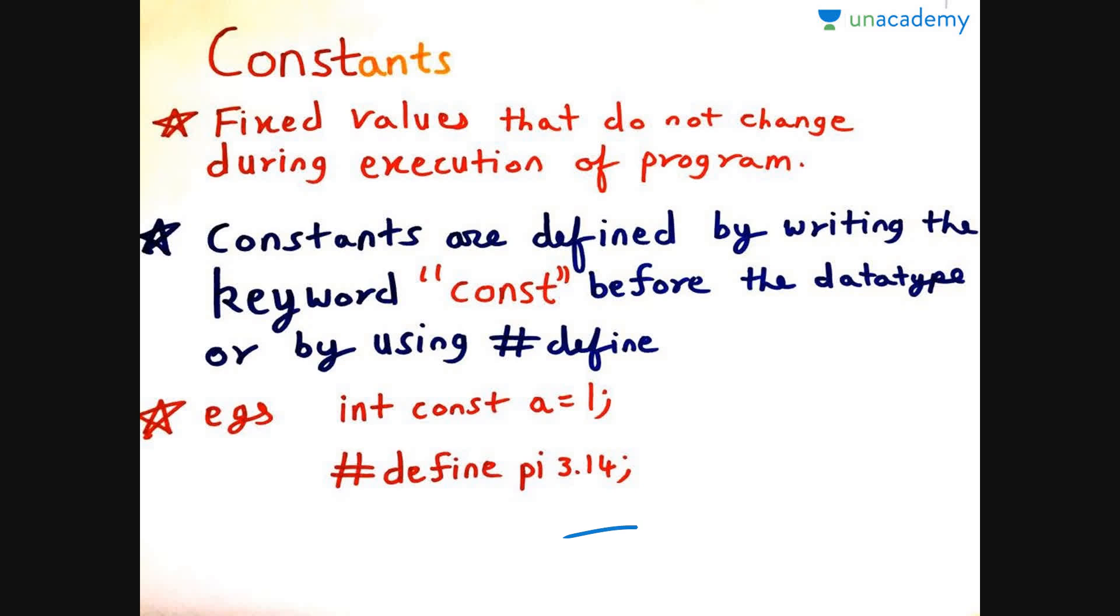Another thing is we can declare by using hash define. We all know that pi value is constant throughout. Hence to make that constant, we use the keyword hash define and we make the value of pi constant at 3.14. So constants do not change the value and variables cannot be used as constant.